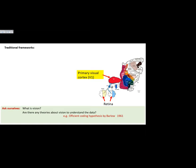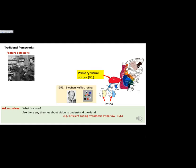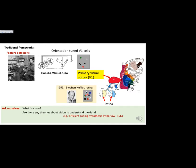The traditional and ongoing framework centers on feature detectors. You stick an electrode in the brain, flash things on a screen, and see what visual input excites neurons. That tradition started over half a century ago on the retina with Steve Kuffler, who found center-surround features. In V1, Hubel and Wiesel found neurons excited by bars — vertical, horizontal, moving, black, white — going from dots to bars.